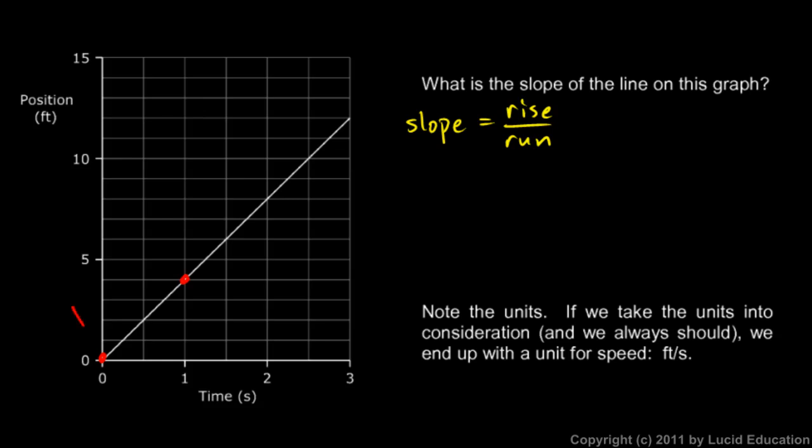How far up does it go if you go from this point to that point? That's the rise. And how far over does it go? That's the run. Well, you can see on the graph that it goes up four. And specifically, that's four feet. So the rise is four feet.